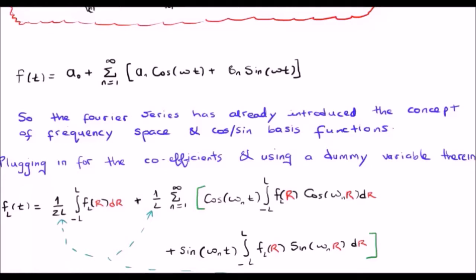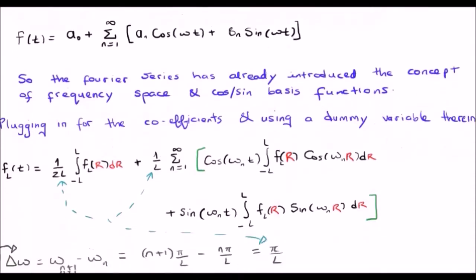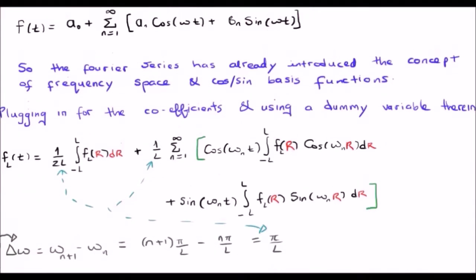Now, while the integrals are continuous, we still have this summation along the cosines and sines. The summation is in omega, we have ωₙ here, so omega is discrete. What would Δω be? If we look at it, we see that Δω turns out to be π/L.